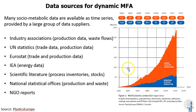Here on the right side you see an example of the world plastics production supplied by Plastics Europe where you can see the time series dating back to the 1950s of total plastic output and plastic output in Europe. We also have the UN statistics supplying us with trade data and production data, Eurostat doing the same for European countries, the International Energy Agency for energy data, of course the scientific literature that mainly supplies process inventories and stock estimates, and we have the national statistical offices often with data on production and waste and also NGO reports.